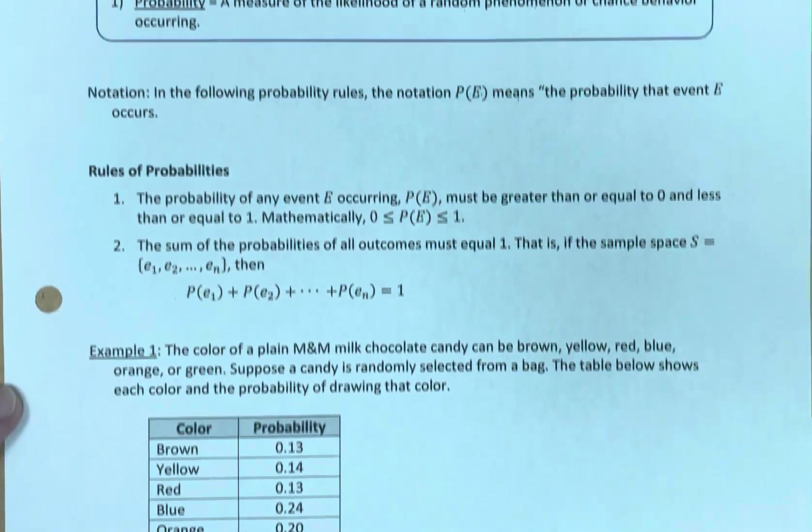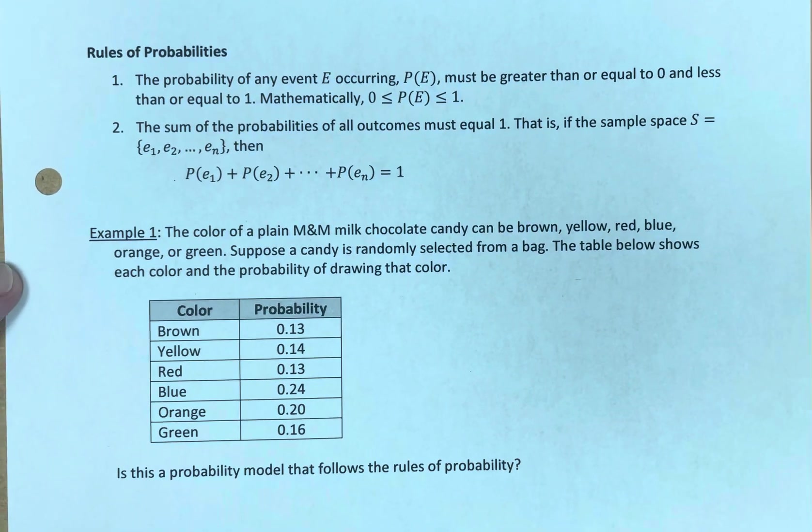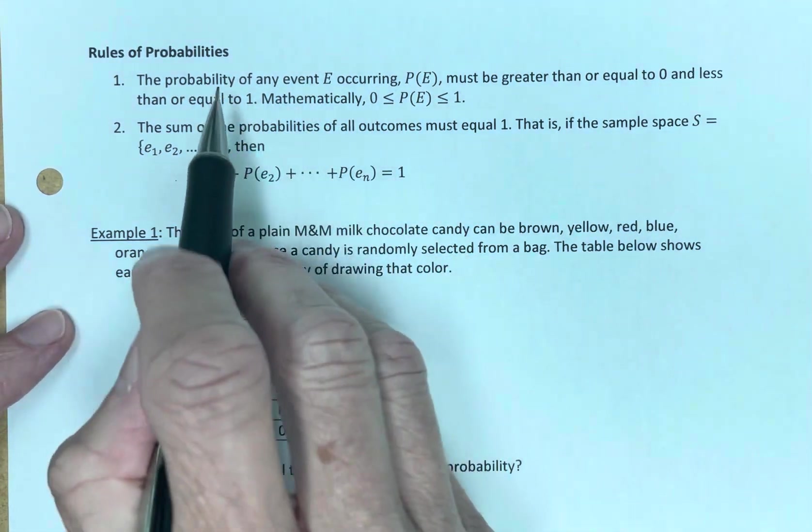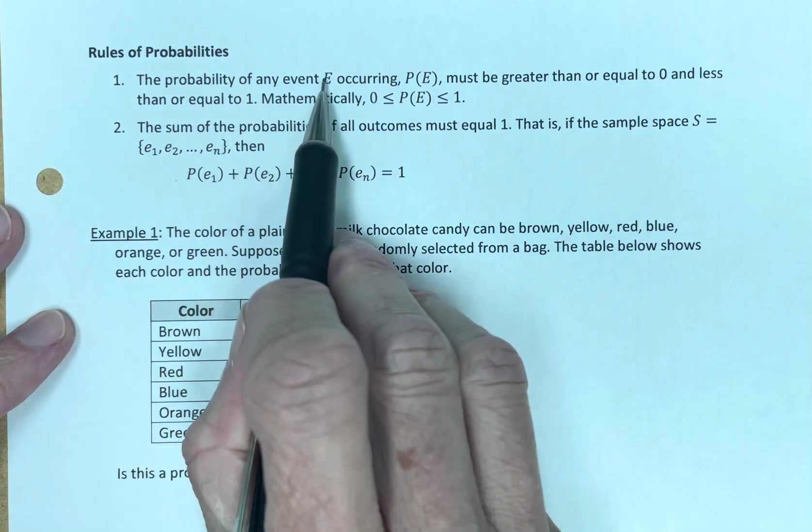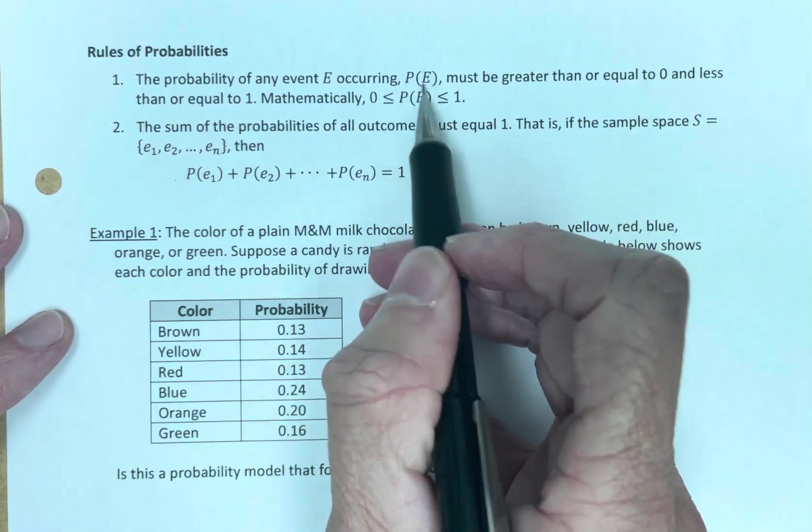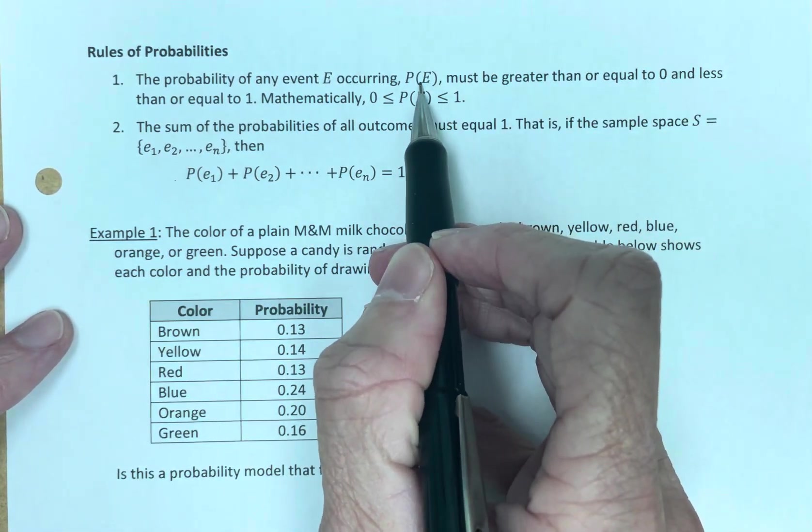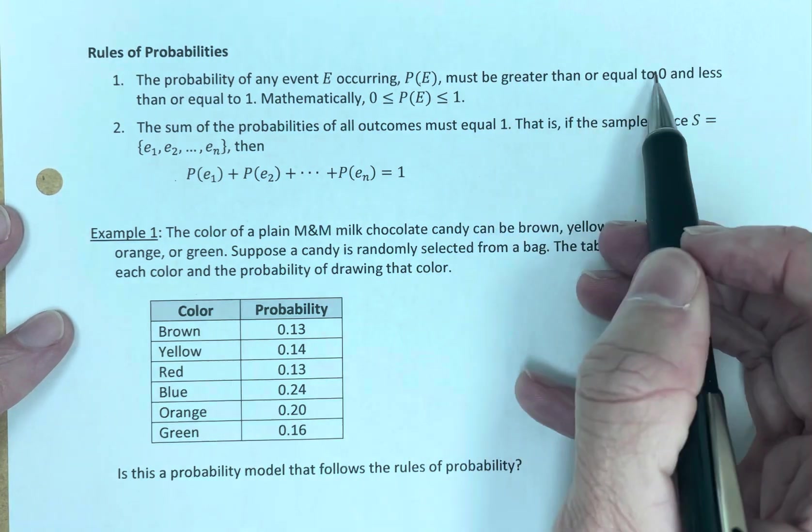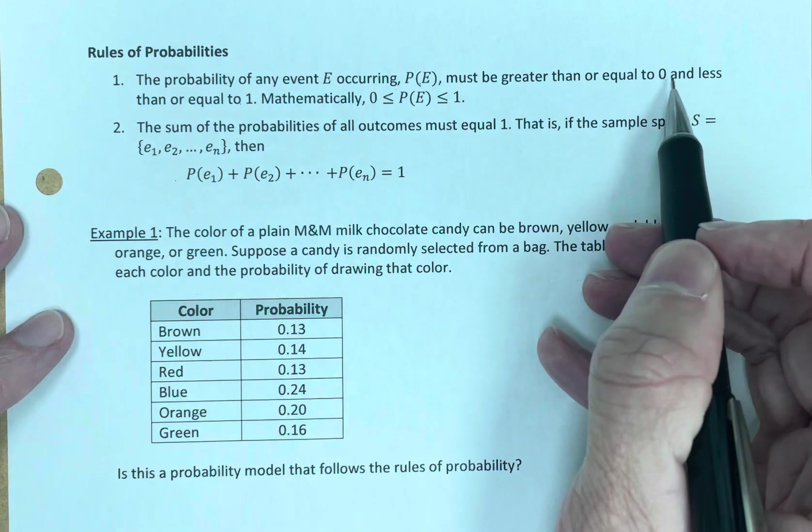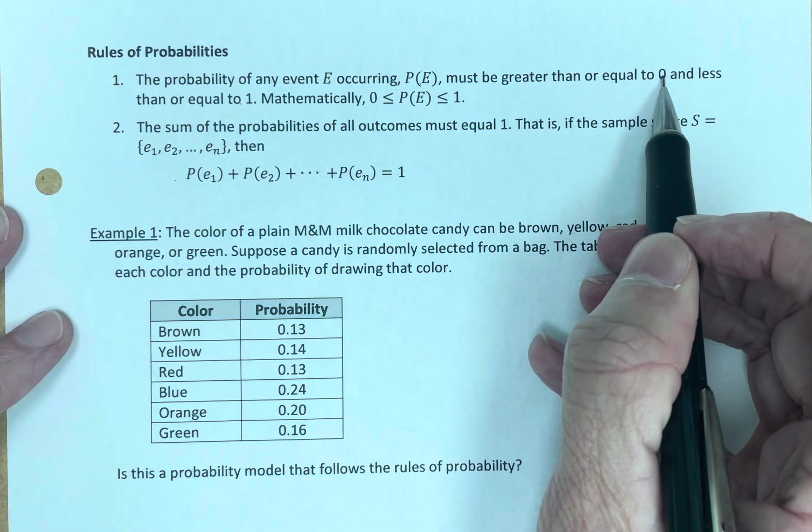So what are the rules for probability? Well, simply put, they are right here, number one and number two. The probability of any event E occurring, which we just stated here, is probability of E in this notation, must be greater than or equal to zero and less than or equal to one. Zero, the probability is, the event is not going to happen.